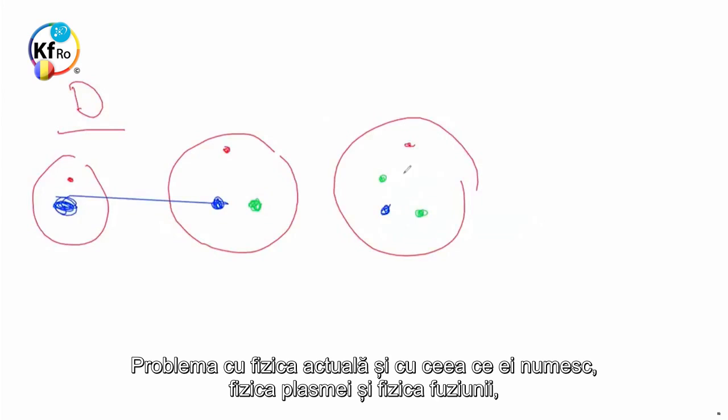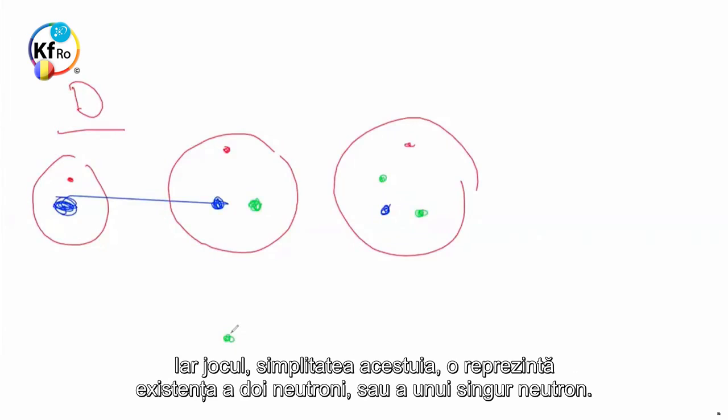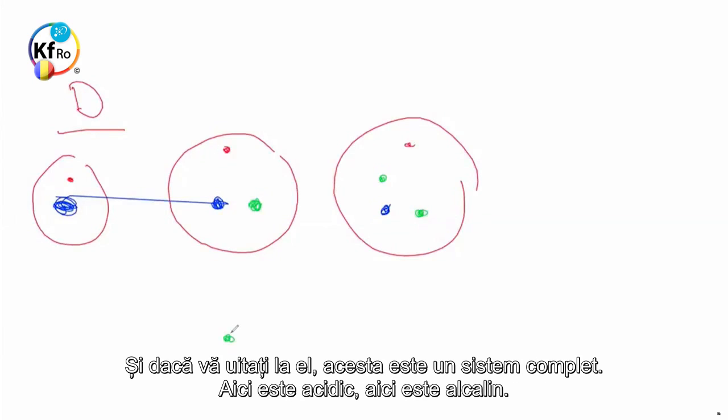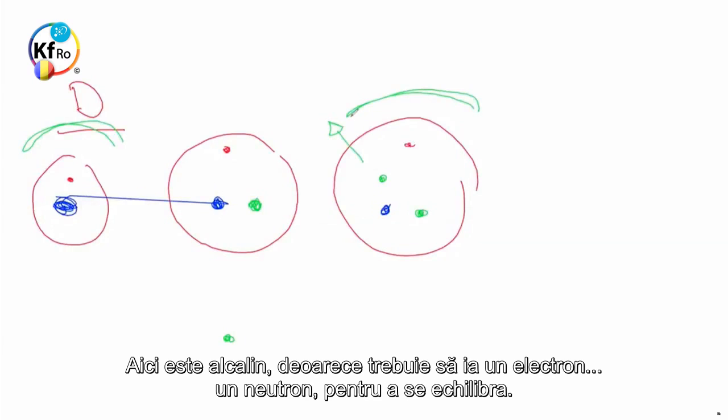The problem with the present Physics, and what they call Plasma Physics and Fusion Physics, is that in so many ways, when you understand this, you understand that you can play the game very simple. And the game, the simplicity of it, is the existence of the two Neutrons or the single Neutron. And if you look at it, this is a complete system. Here is Acidic, here is Alkaline. Here is Acidic because an extra Neutron is radiating, is giving. Here is Alkaline because this needs to get one Electron, one Neutron, to become balance.